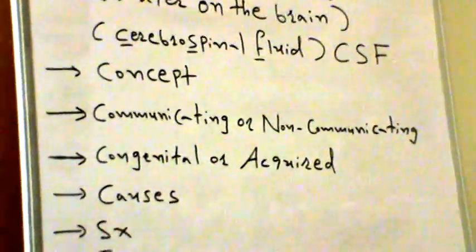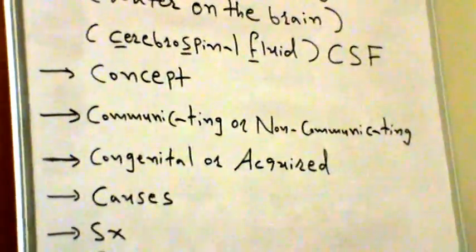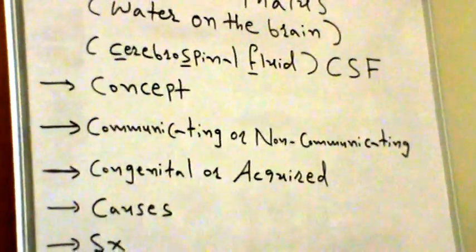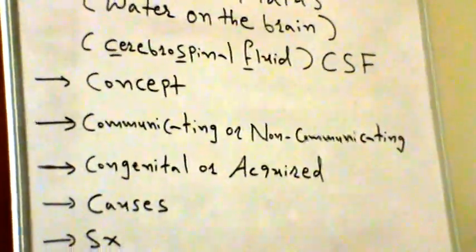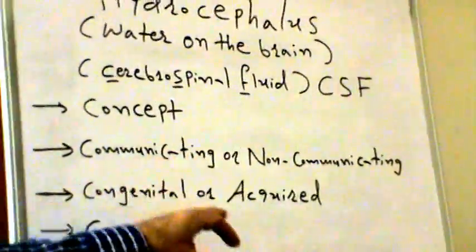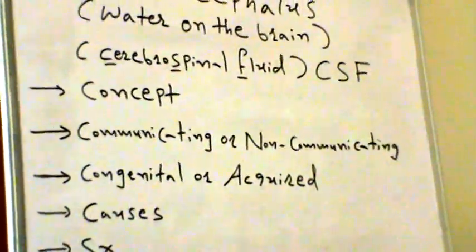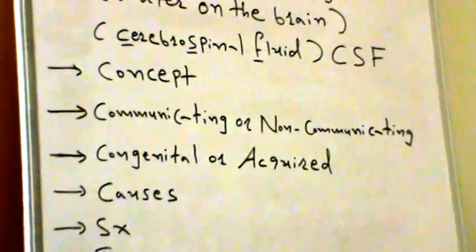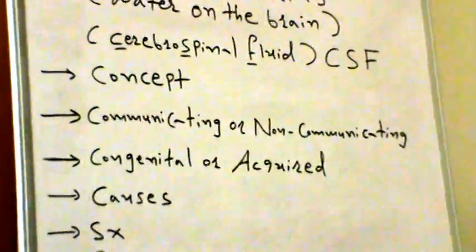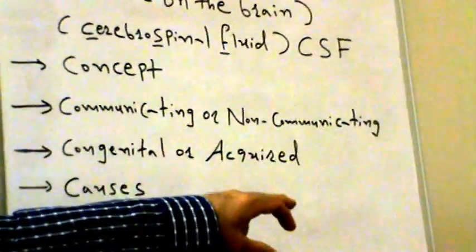Whereas non-communicating hydrocephalus is caused by an obstruction within the ventricle system. Both communicating and non-communicating hydrocephalus can be subdivided into congenital and acquired types.